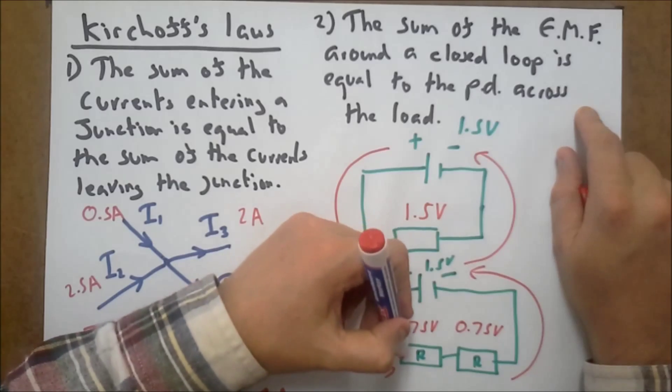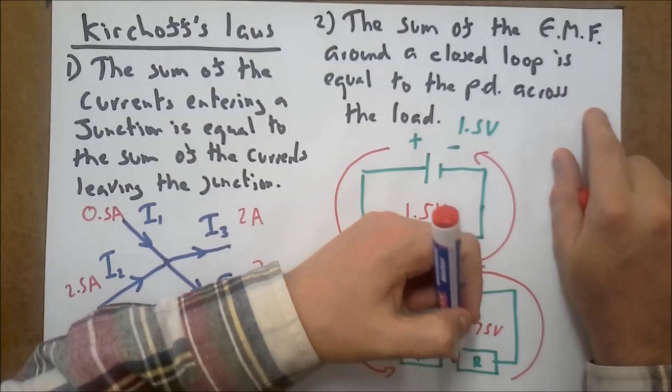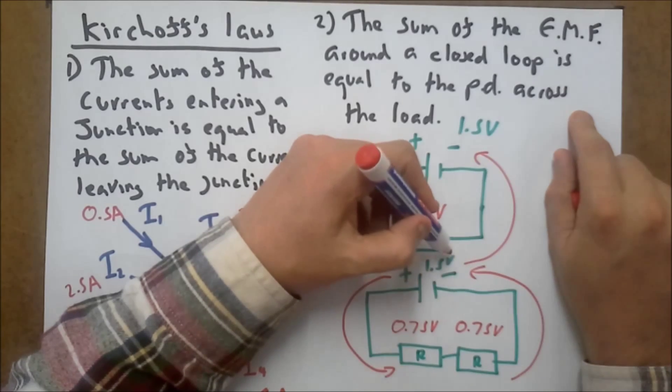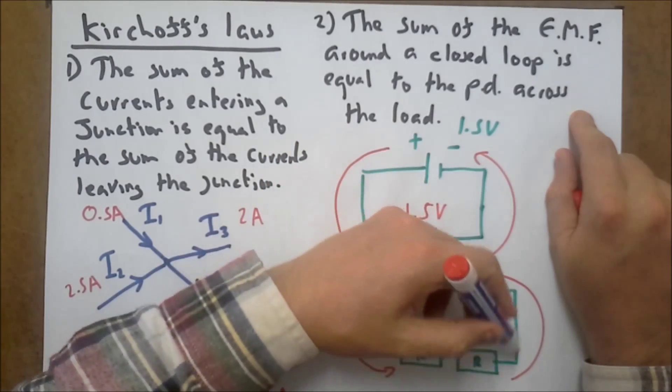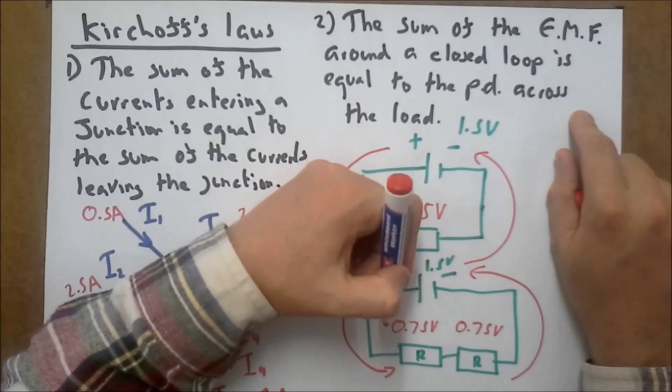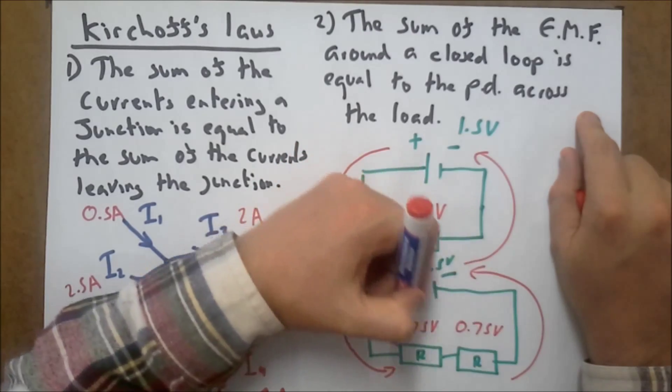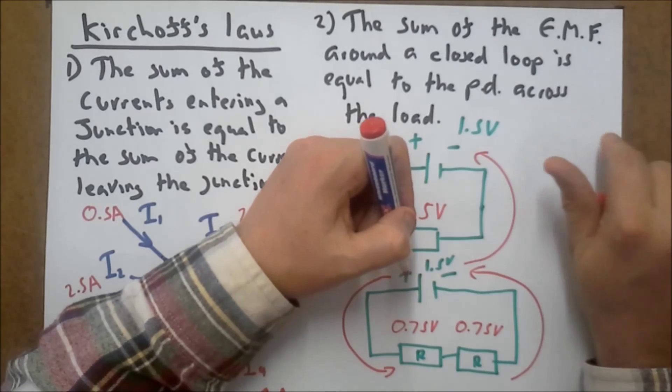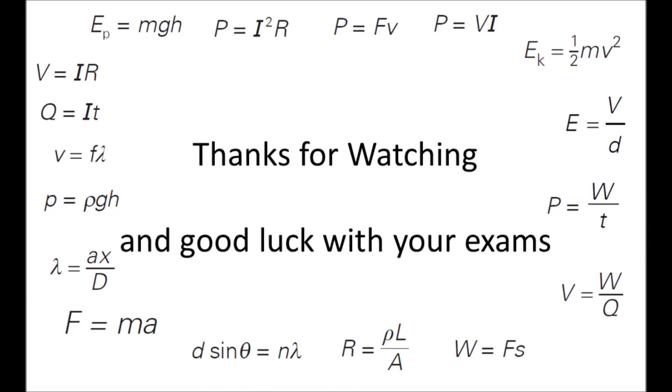It doesn't matter if these resistors do or don't have an equal resistance. It's just that this 1.5 volts going into my circuit will be shared between them, and the sum of the potential differences across here will equal the EMF going into the circuit.